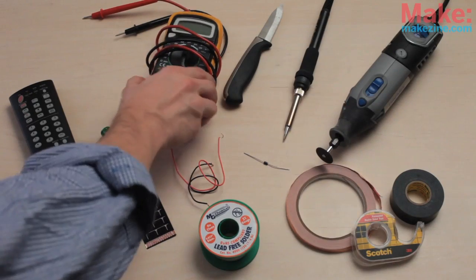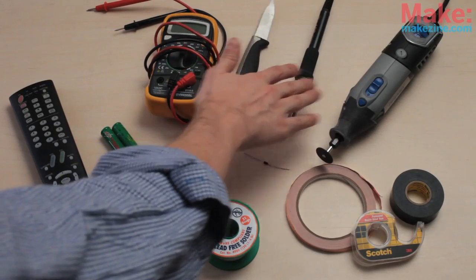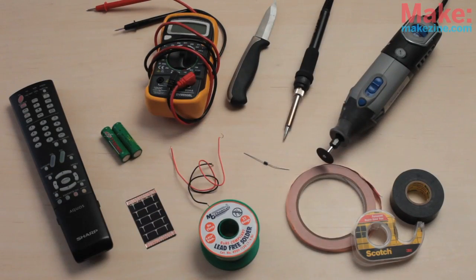For tools, you'll need a multimeter, a knife, a soldering iron, and a rotary tool is helpful to make a notch in the battery compartment for the wires.